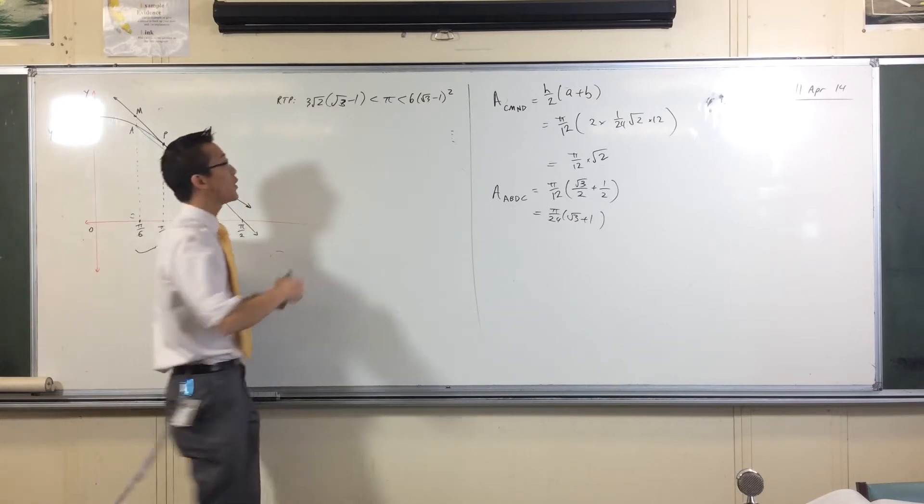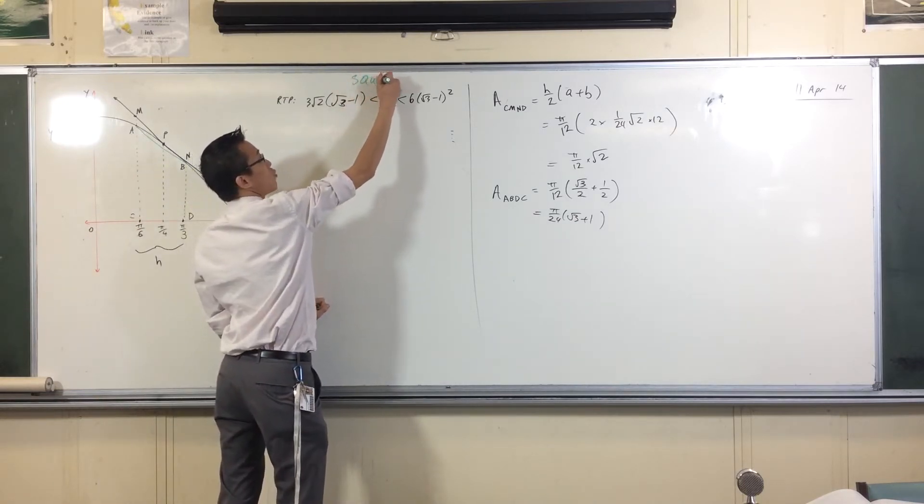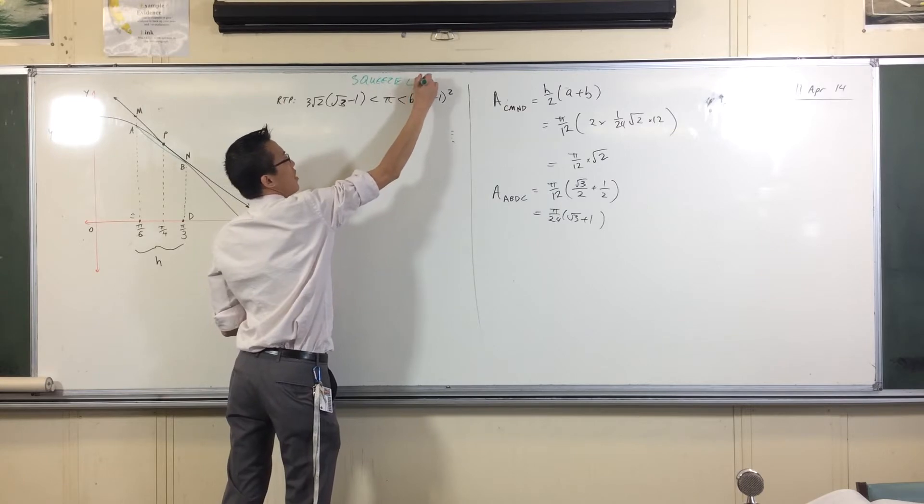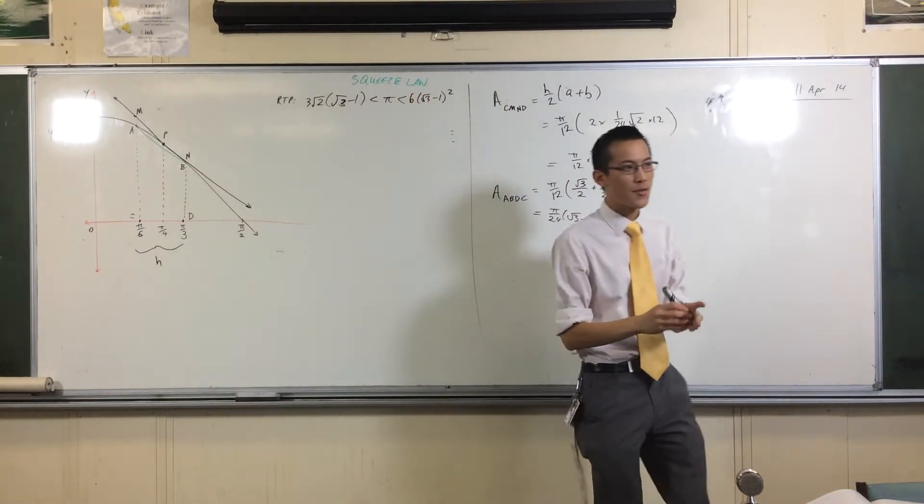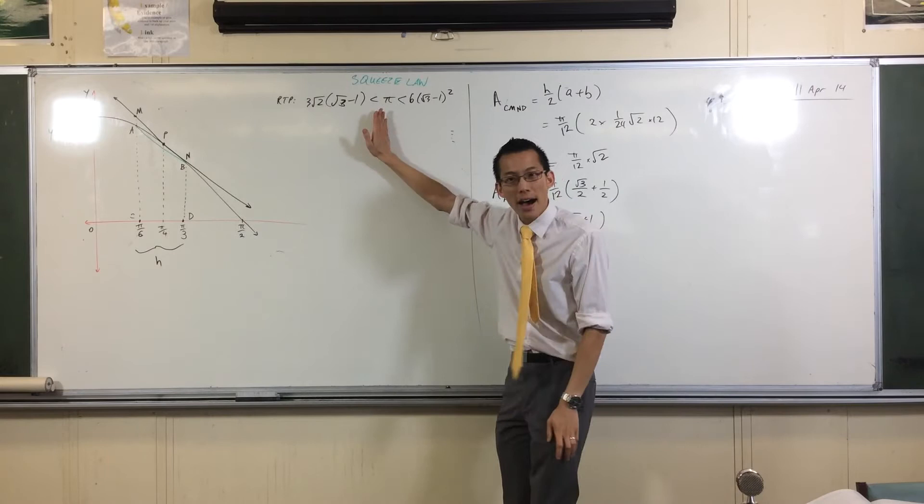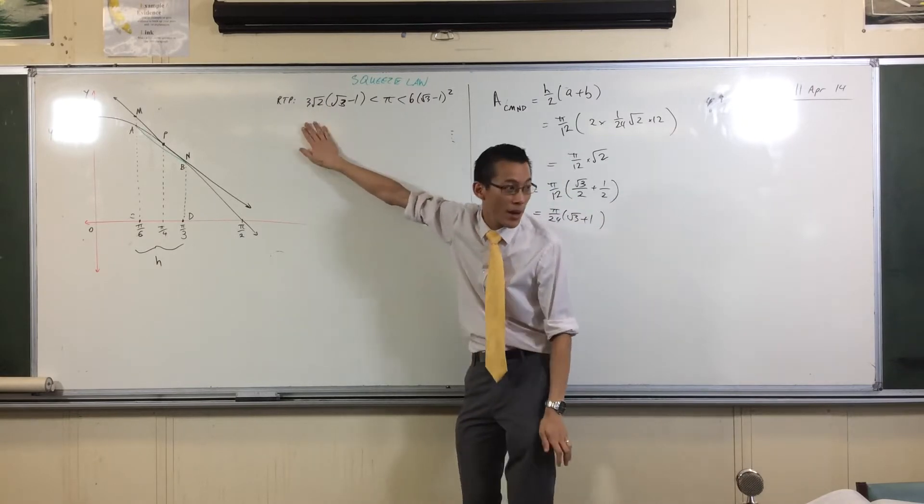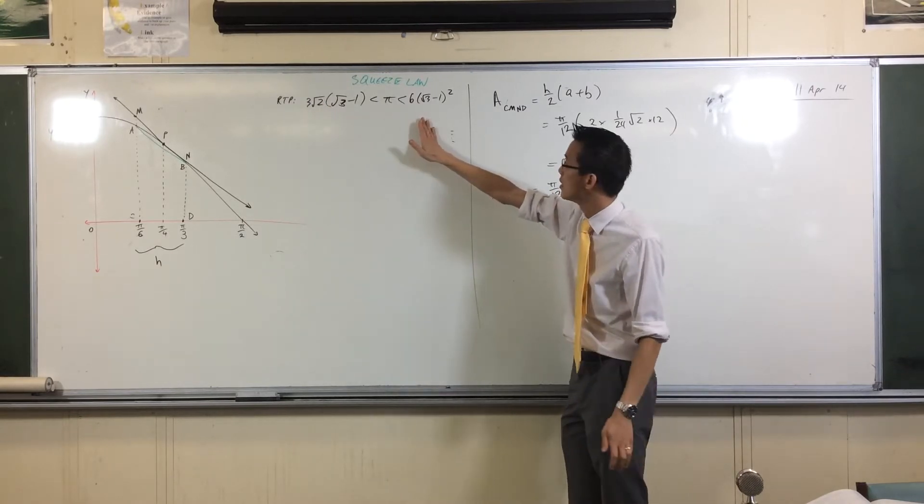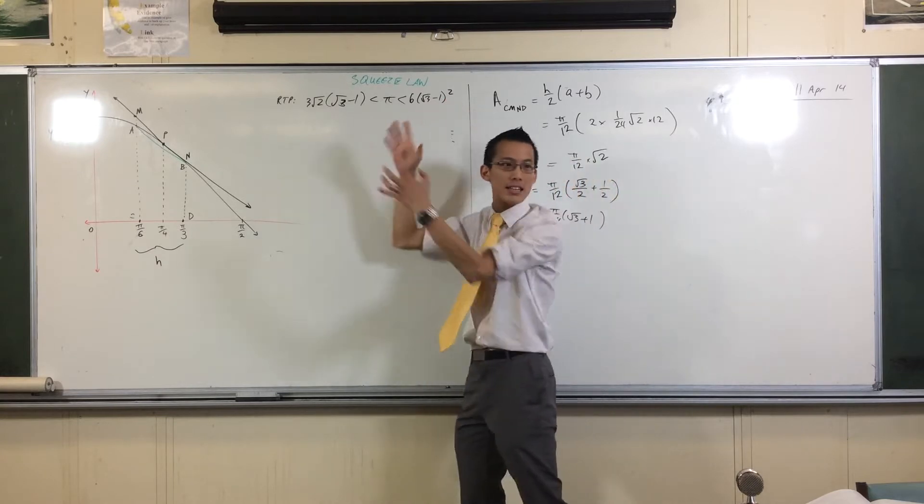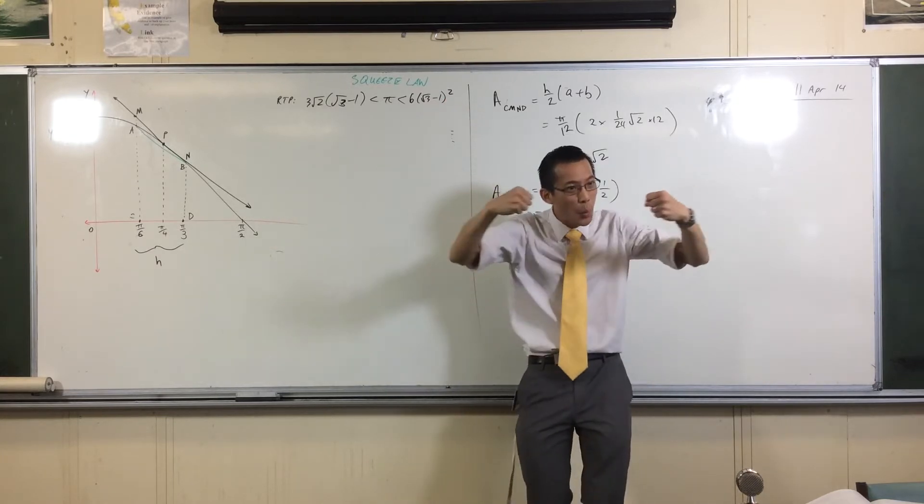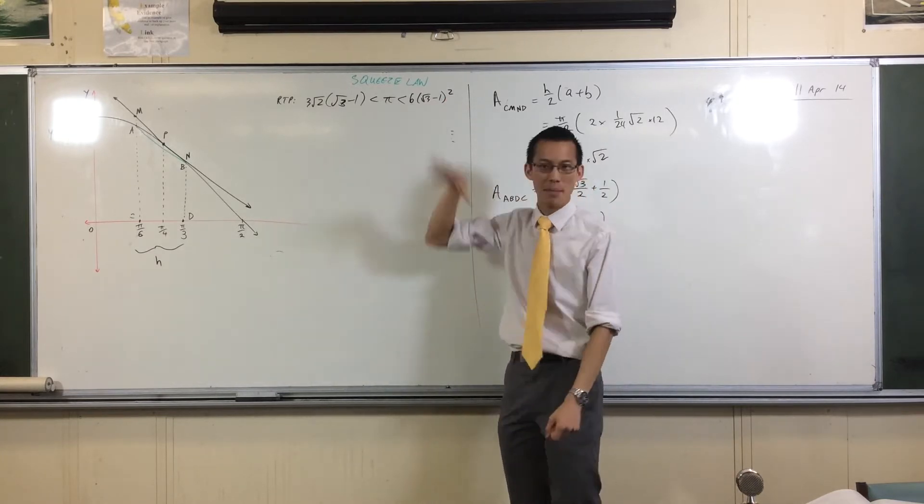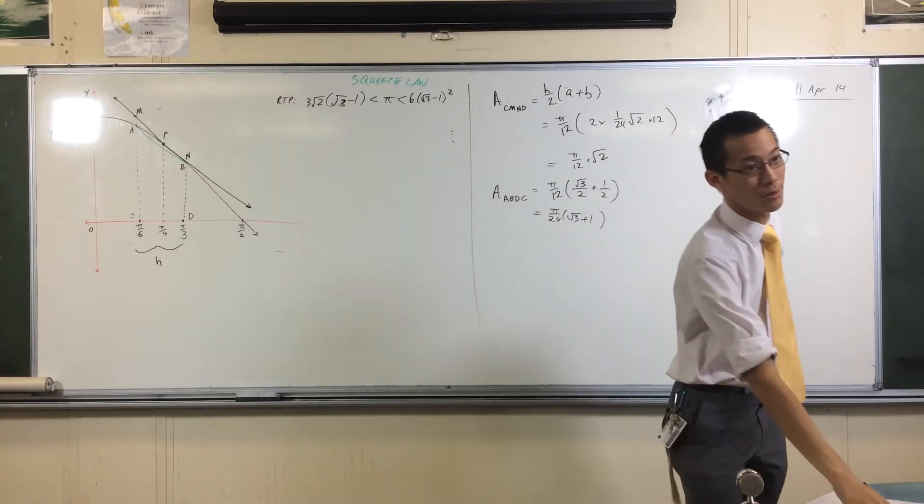It was called the squeeze law, right? So it's where you've got this unknown quantity. You've got it in the middle there, but if you can work out something that's below it and something that's above it, and then you can get those two things to get quite close to each other, they squeeze the thing in the middle to some defined value, some well-defined value.